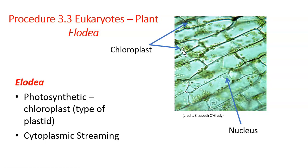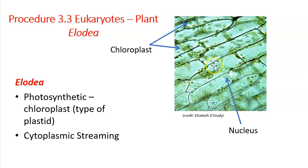Oscillatoria was photosynthetic but did not have these membrane-bound organelles called chloroplasts. Here, we're looking at a photosynthetic plant cell, and we can clearly see those little chloroplasts. In addition, the cells have a sort of uniform, almost rectangular shape. That rectangular shape is because of the plant cell's rigid cell wall. Within the cell wall, the plant would have a plasma membrane, but what gives it that uniform shape is the cell wall.